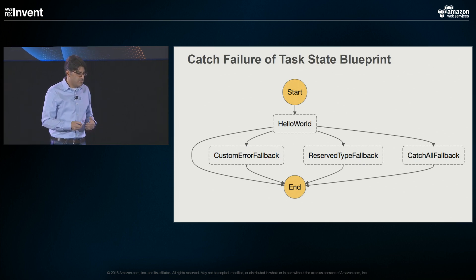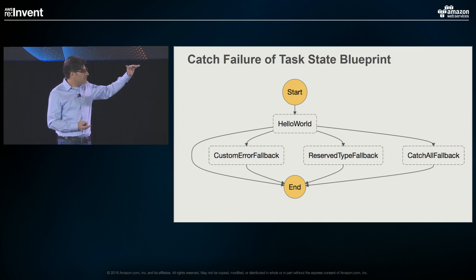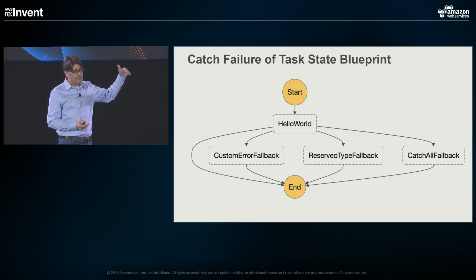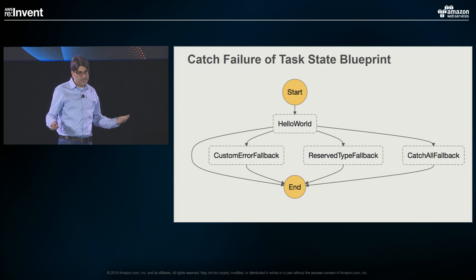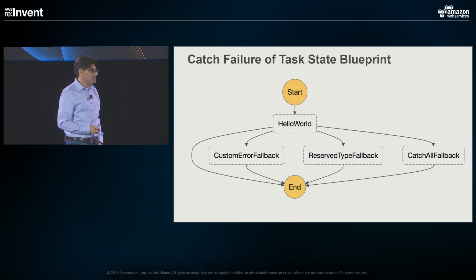When you have catch failure, your state machine reflects this visually — the states you go to when catching show up in your state machine diagram, because you have to have a destination for each of those catch states.